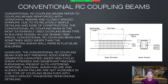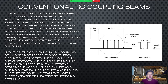In low seismic risk areas, conventional RC coupling beams are sometimes sized wider than the connecting shear walls, as appears in flat slab buildings. However, the conventional reinforced concrete coupling beam does not preserve good energy dissipation capacities under high cyclic shear stresses, and significant pinching phenomena are present in its hysteretic response. Diagonal shear failure and sliding shear failure are not avoidable in this type of coupling beam, even with closely spaced transverse reinforcing detailing.